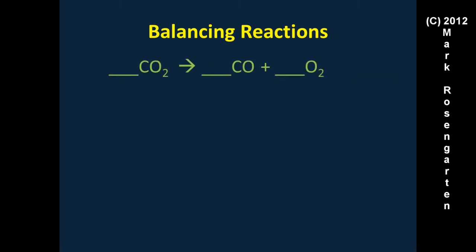Example six: carbon dioxide forms carbon monoxide plus oxygen. This is tricky because oxygen is split between two compounds, giving an odd number of oxygens on one side. The trick: double the odd number by putting a two in front of CO. Now we have two plus two equals four oxygens on the right. We then put a two in front of CO₂ on the left to get four oxygens there as well. That also gives two carbons on each side — conveniently balanced.